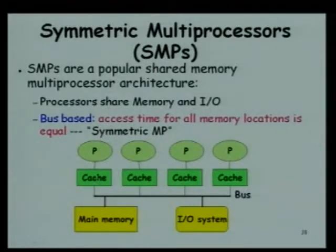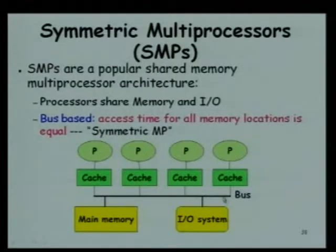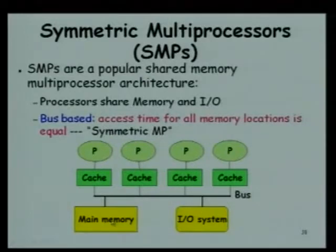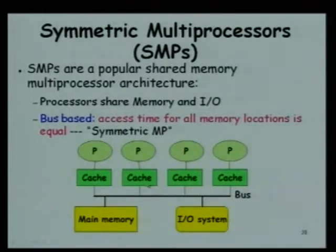Here, as we were discussing the architecture, each processor has its own cache and the interconnection among processors is a bus. We were discussing why a bus is a possible interconnection between the processors, why not a network. Here the access time for all memory locations is equal. Any processor - the average access time for the memory is the same because all basically interact through the bus.